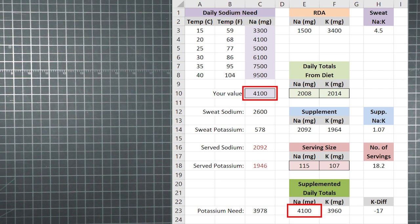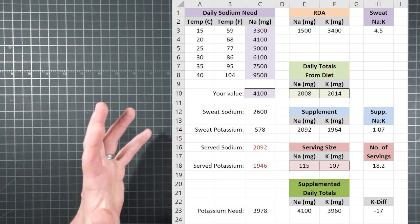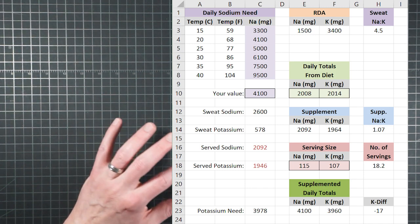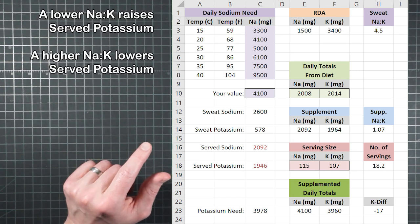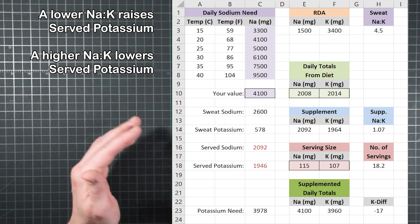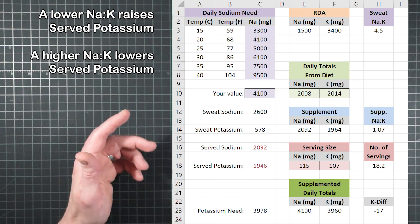Sodium will always match the need perfectly, because that's how the calculator is built to compute that first. What you do is check to see where your total potassium intake ends up. If we had chosen a supplement whose ratio was different, the sodium amounts would still match, but the potassium would start to vary. If the NAC you choose is lower than the recommendation, your served potassium will rise, and if the NAC is higher, the potassium will drop.